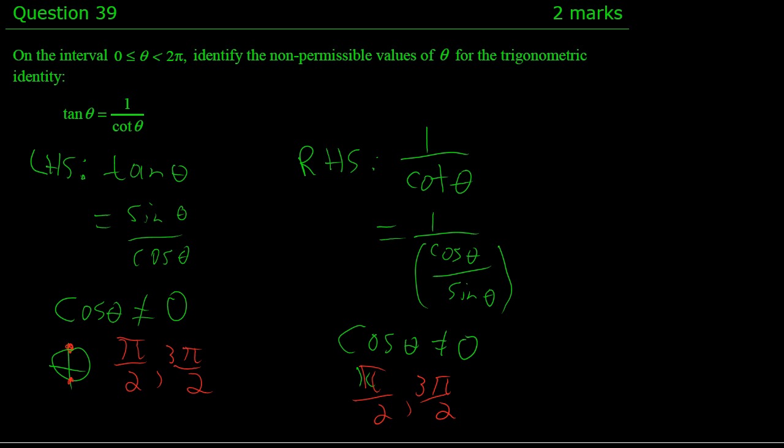But I also need to solve sin θ cannot equal 0. And sine, when we think about sine, we're thinking of the y-coordinate not being equal to 0. And when we're thinking the y-coordinate not being 0, we're thinking right here, right here, and here. So we're thinking 0 and π.